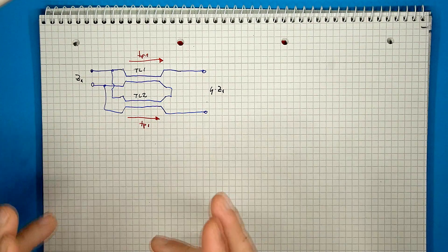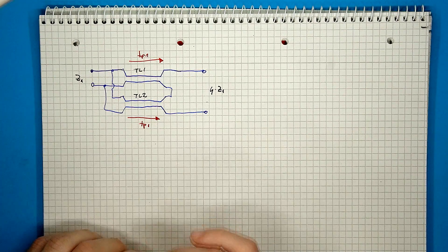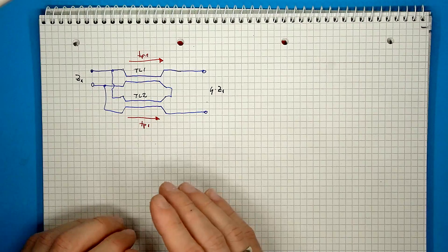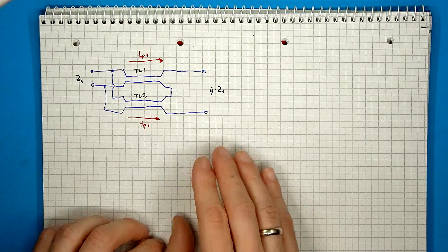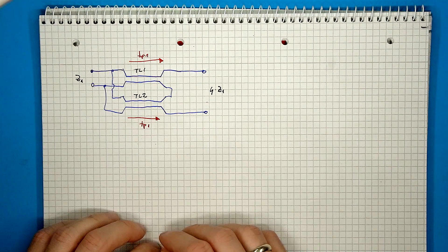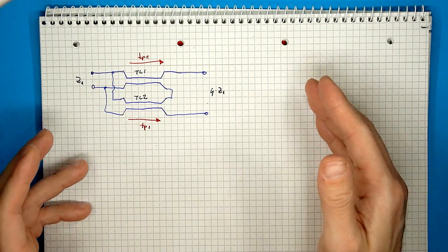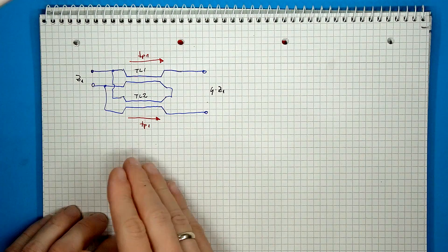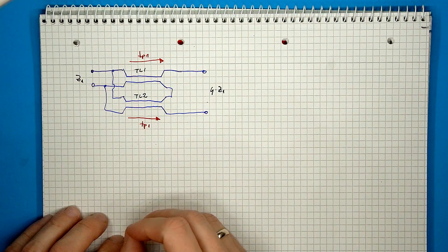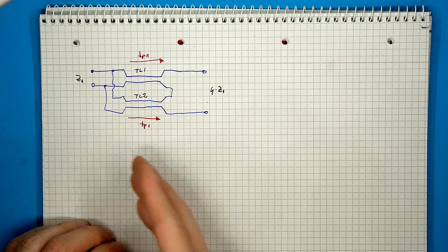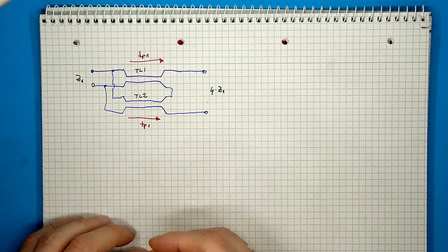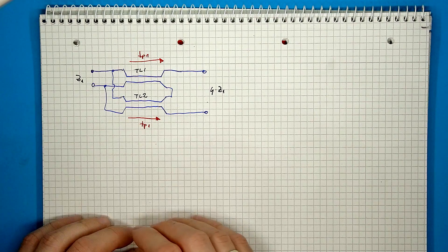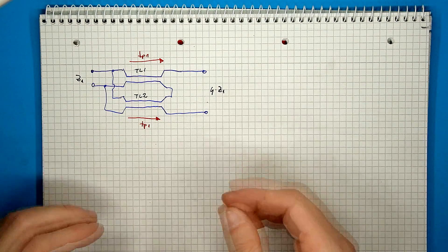Looking at our structure as a set of transmission lines, the first important observation to make is that the signal going from one side to the other always goes through all of the lines. In other words, if the length is exactly the same, then the propagation delay will also be the same. So you should have no phase shift in between the various signals that cross the transformer. This is why the Guanella transformer is part of the equal delay transformer category.